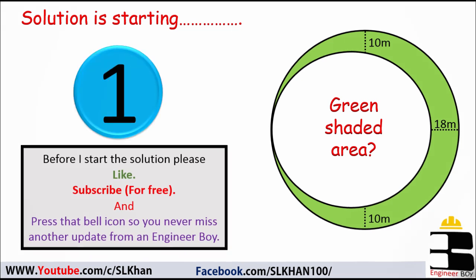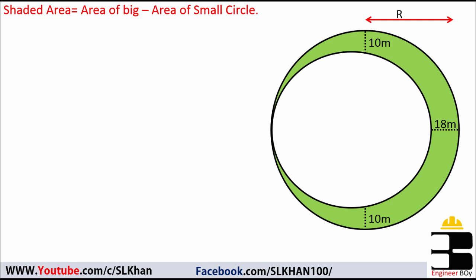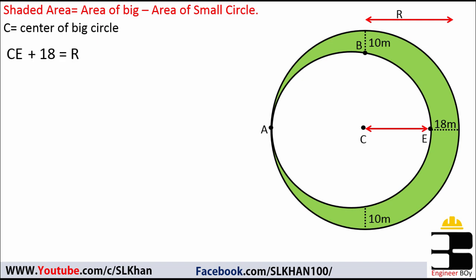In the solution, as you can see, the shaded area must be the area of the big circle minus the area of the small circle. Before going ahead, I'm going to locate a few points: C, A, B, and E. You can notice the radius of the big circle must be CE plus 18, or you can say CB plus 10 meters.